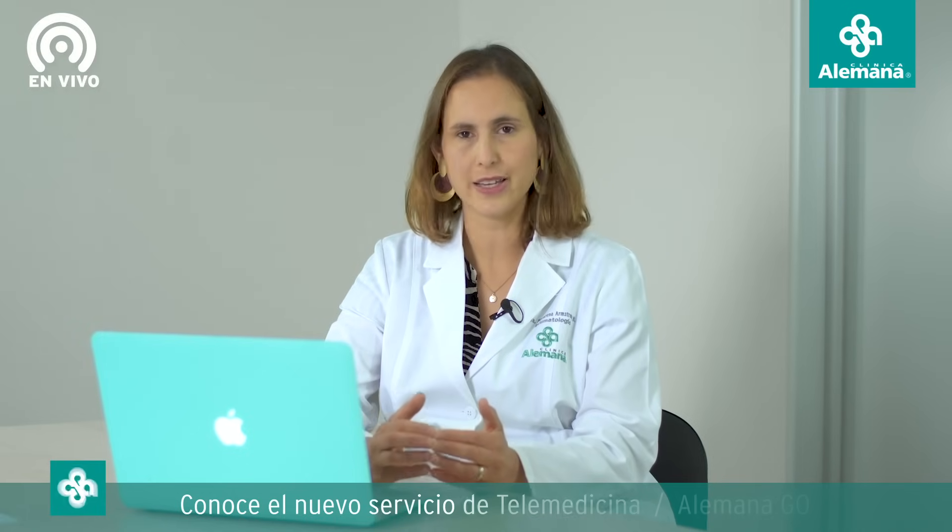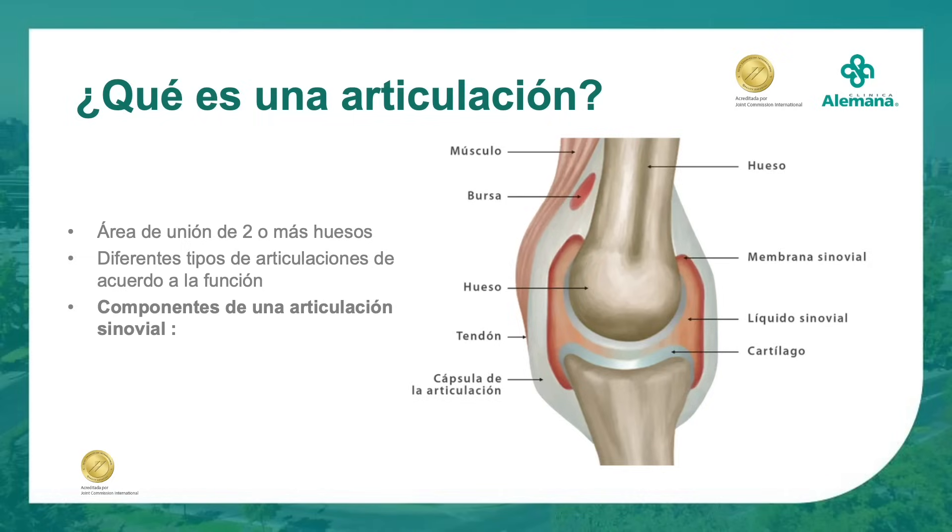Por ejemplo, en el cráneo tenemos articulaciones fijas que no se mueven. En la columna tenemos otro tipo de articulaciones en las cuales los huesos se unen mediante un disco articular. Y tenemos las articulaciones como las del hombro, las rodillas y las caderas, que nos permiten movilidad en más arcos de movimiento.